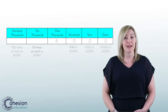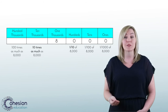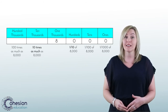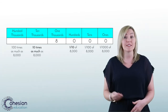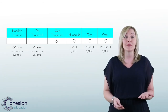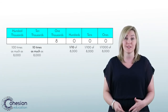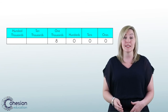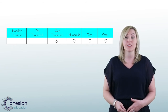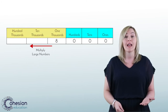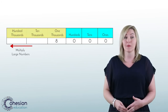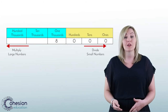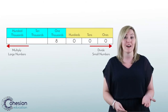Another common error that can occur is when students relate multiplication and division to find the relationships. This skill on its own is fine, but students may divide instead of multiplying or multiply instead of dividing. To address this error, once again use the place value chart to prove that numbers to the left are getting larger, and therefore you should multiply to get there. On the other hand, numbers to the right of the chart are smaller, and you should divide to get there.